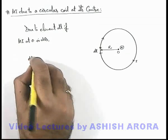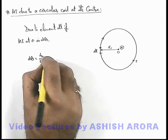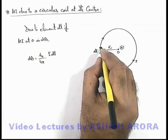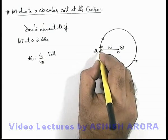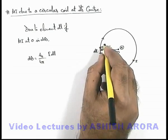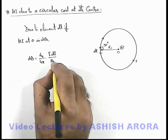Then this dB can be given by Biot-Savart's law as μ₀/4π times i dl sin θ. The angle which the position of this point O with the element dl is 90 degrees, so sin 90 can be taken as 1, divided by r².